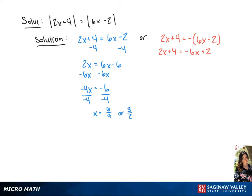For the second equation, we're going to subtract 4 from each side, which will give us 2x equals negative 6x minus 2.